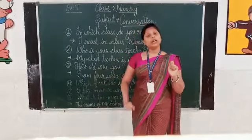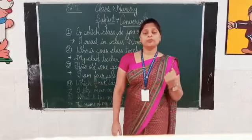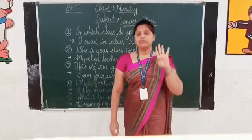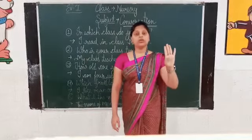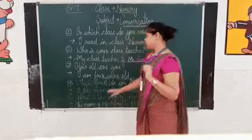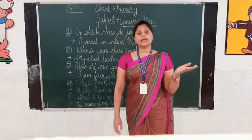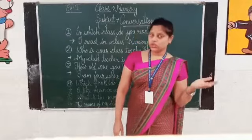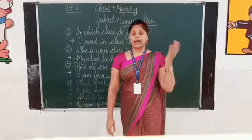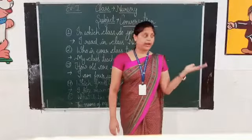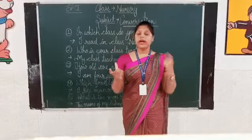Now third: How old are you? How old are you? I am 4 years old. I am 4 years old. Now fourth: Which food do you like most? Which food do you like most? You will say: I like mango and banana. I like mango and banana.